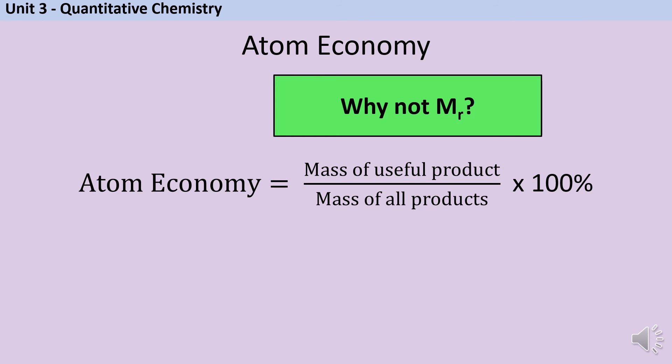You might also be thinking, well, hold on, why are you dividing by the mass of the products, not the mass of the reactants? And again, you're right, you'll often see it written down that we should be doing the useful product divided by the reactants. Here's the thing though, conservation of mass tells us that the mass of the reactants and the mass of the products is exactly the same. So if I've already worked out the mass of one product, to get the total mass of products, I only need to work out the other product. If I'm going to work out the total mass of reactants, I have to go right back to the beginning and calculate everything. So it's going to take me longer, and at the end of the day, the answer will be exactly the same.